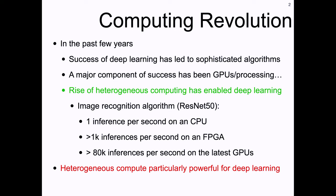There's a computing revolution going on — the rise of heterogeneity, really enabled by deep learning. Deep learning allows us to take advantage of parallel processing, and processors like GPUs and FPGAs give us huge dramatic speedups. For a conventional image neural network benchmark, you can get something like a factor of 1,000 speedup comparing a single CPU core and an FPGA, and even almost 100,000 with the latest GPUs.